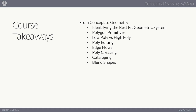The second key takeaway is low poly versus high poly — and what your final output is going to be. We're going to use defining local and global editing, always keeping models as low poly until detailing. We'll focus on establishing edge flows, figuring out what areas you want to have more resolution. And then we're going to look at poly creasing a bit.